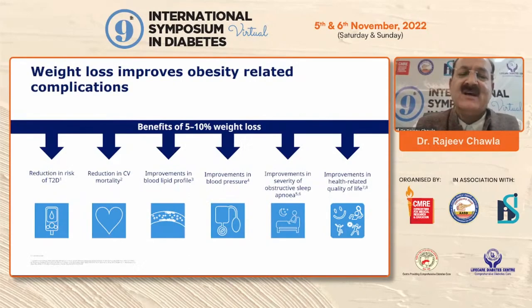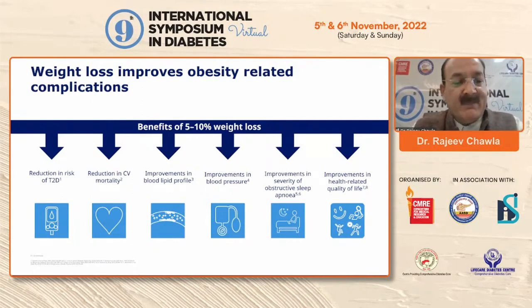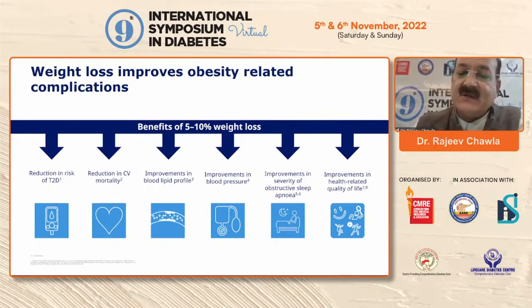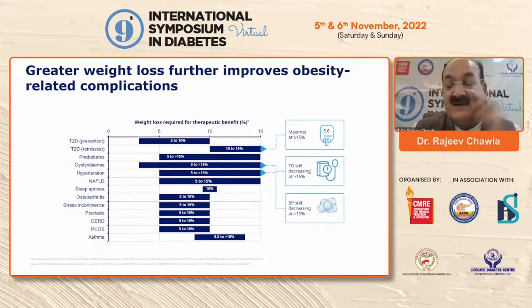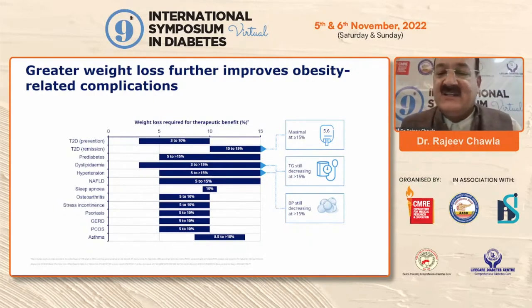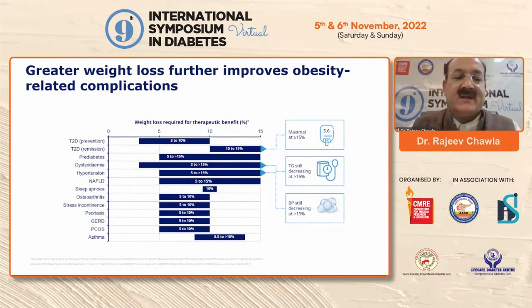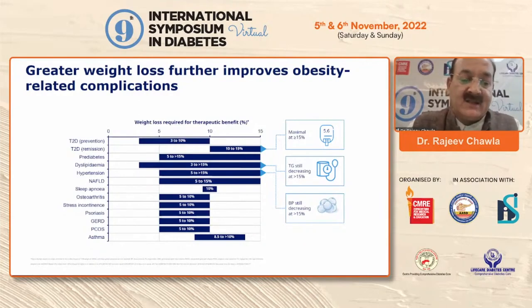Are there any benefits of weight loss? These are convincingly seen in all the evidence. A 5% to 10% weight loss will improve all obesity-related complications — maybe simply prevention of conversion from IGT to type 2 diabetes, with significant reduction in CV mortality. Lipids and blood pressure will improve, and obstructive sleep apnea scores will improve. If you have greater weight loss — more than 10% to 15% — Roy Taylor's data from the DiRECT study showed that 15% weight loss in one year may reverse or put diabetes into total remission, with significant improvement in triglycerides and blood pressure.